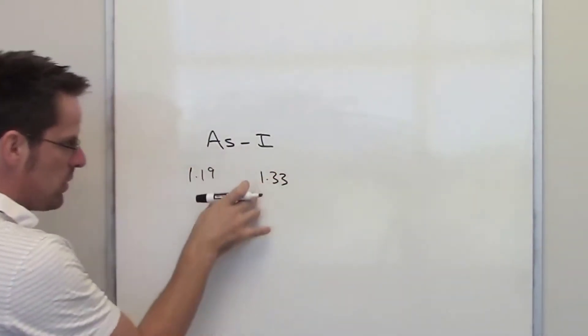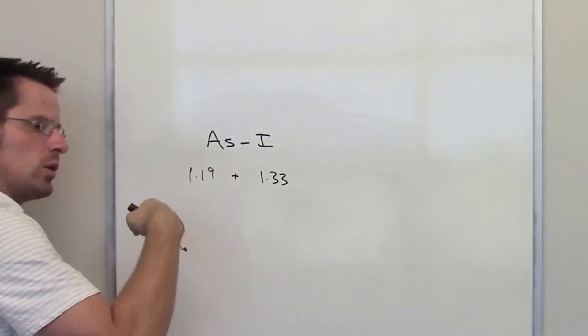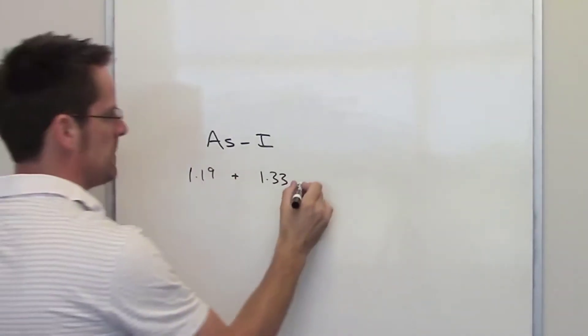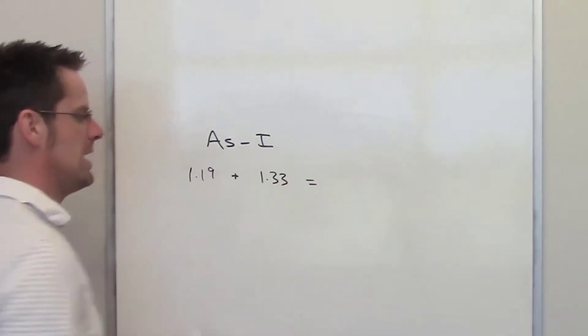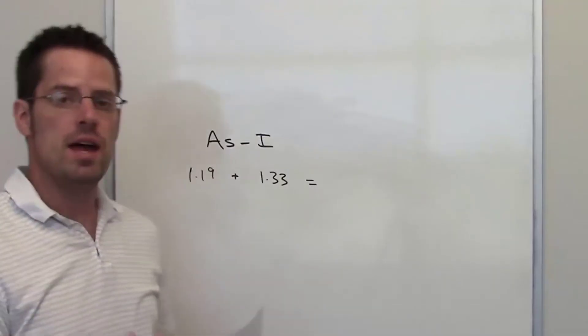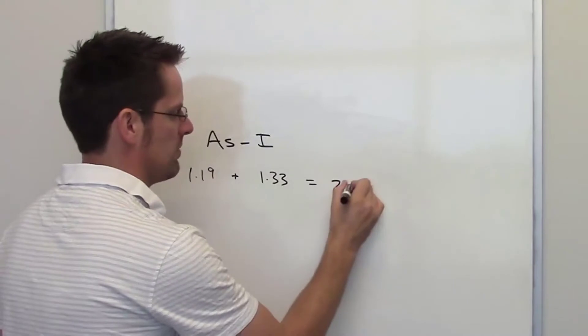Thus when these two elements bond their total radius from one nucleus to the other should be the sum of these two numbers, 1.19 plus 1.33. That number ends up coming out to be 2.52.